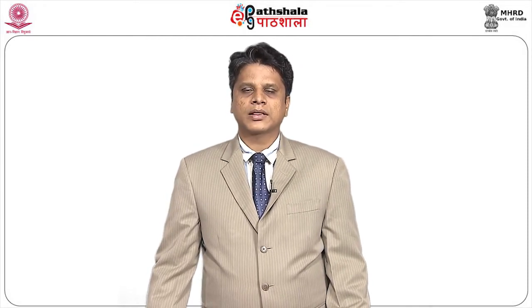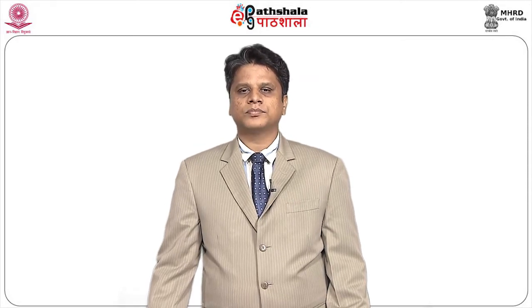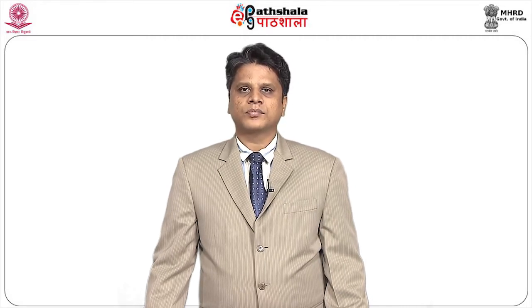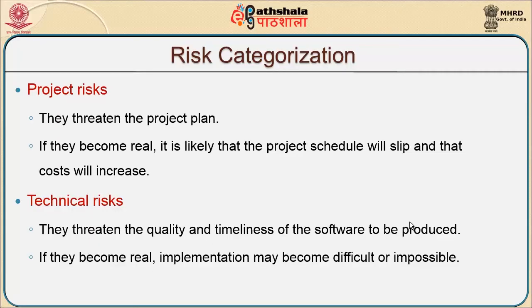The second category of risk is technical risk. Because of this technicality, it affects the quality and the timeline of the software to be produced. The threatening effect will be on two parameters: quality and timeliness. If we want to develop the software, the parameters we look for are quality and the deadlines associated with the project. Because of these technical risks, these two are mostly affected, and implementation may become difficult — sometimes impossible to deliver.